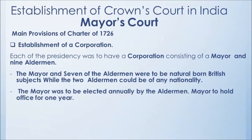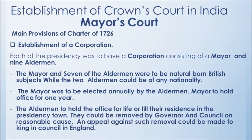The Mayor was to be elected annually by the elder men, and would hold office for one year. The elder men were to hold office for life or till their residence in the presidency town. They could be removed by the Governor and Council on reasonable cause, and an appeal against such removal could be made to the King and Council in England. So the executive was given power to remove elder men on reasonable cause, such as corruption.